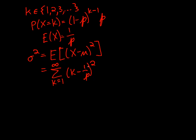Squared, times the probability that x was equal to k. So we've got times 1 minus p to the k minus 1, times p.